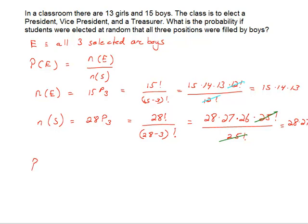So, the probability that E occurs is the ratio of the number of outcomes in E over the number of ways that we can simply elect the three students, which we found was the number of outcomes of S, twenty-eight times twenty-seven times twenty-six.